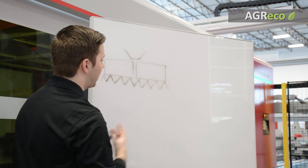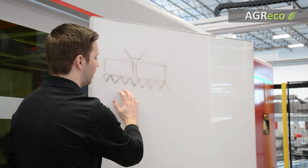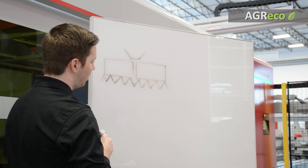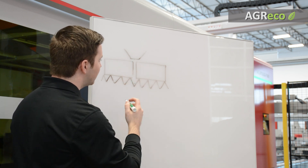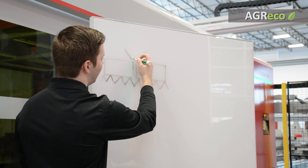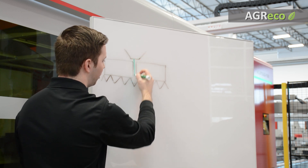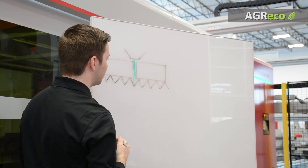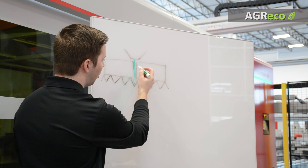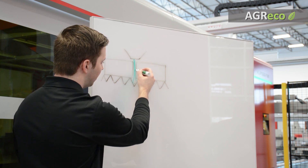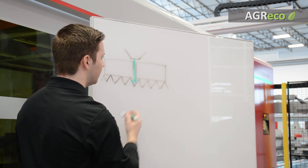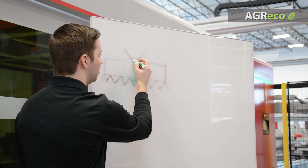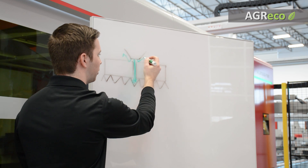Here on our whiteboard, we have our material placed upon our work supports. With standard nitrogen cutting, our assist gas is responsible for evacuating all the debris through our kerf from the cutting process. While most of this assist gas finds its way through the kerf, some hits the top of the material and is wasted.